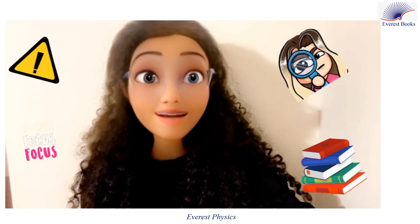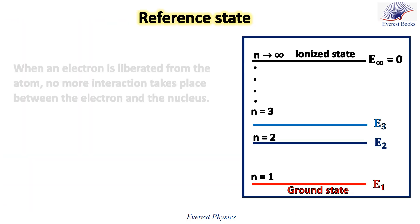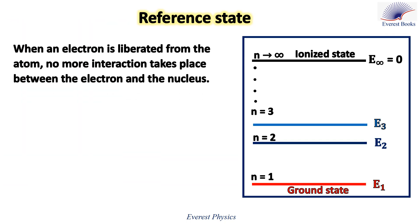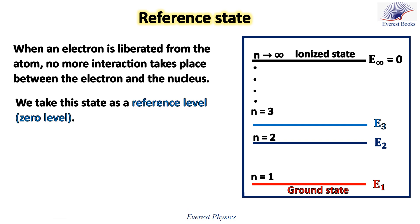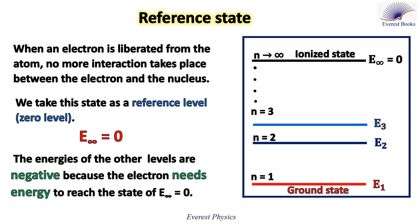This is important: when an electron is liberated from the atom, no more interaction takes place between the electron and the nucleus, so the atom becomes ionized. We take this ionized state as the reference level, or zero level, corresponding to E-infinity equals zero. The energies of all other levels are negative because the electron needs energy to reach the ionized state.